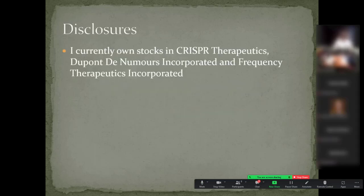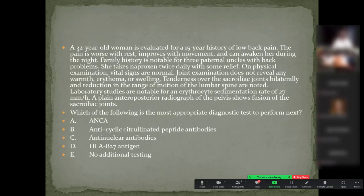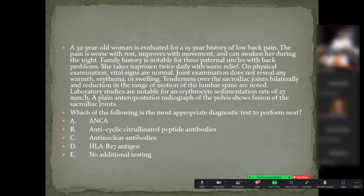I worked with Michael to include some board-style questions. When approaching board questions, read the question and answers first, then go through the clinical text looking for what's being asked. This first question asks: which is the most appropriate diagnostic test? Options are ANCA testing, CCP antibody testing, ANA testing, HLA-B27 testing, or no additional testing. The case is a younger female with long-standing back pain, reduced spinal motion, SI joint tenderness, and fusion of the sacroiliac joint — pretty classic for spondyloarthropathy.